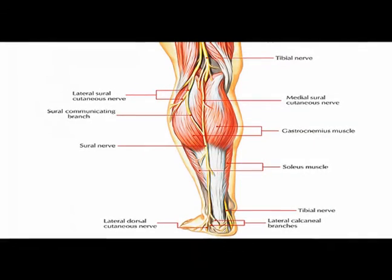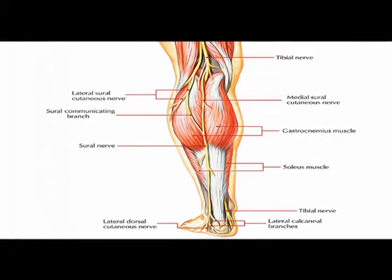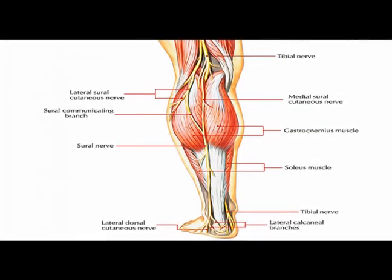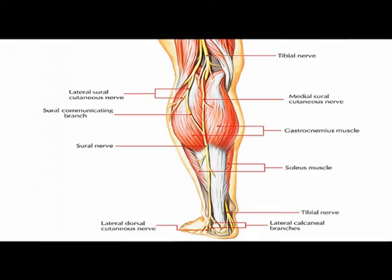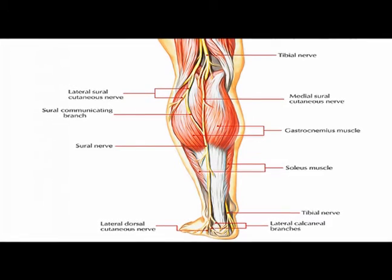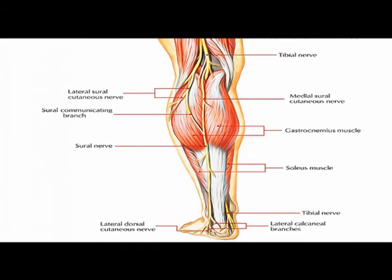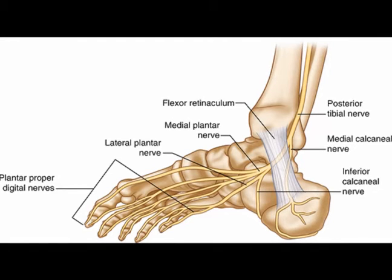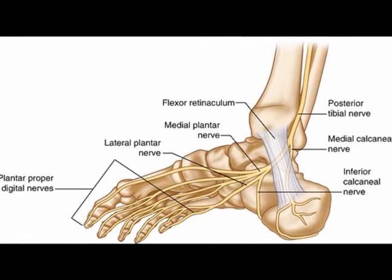The tibial nerve runs under the arch of the soleus and continues distally to descend posterior to the medial malleolus, where it earns the name of the posterior tibial nerve and continues into the foot as the medial and lateral plantar branches.